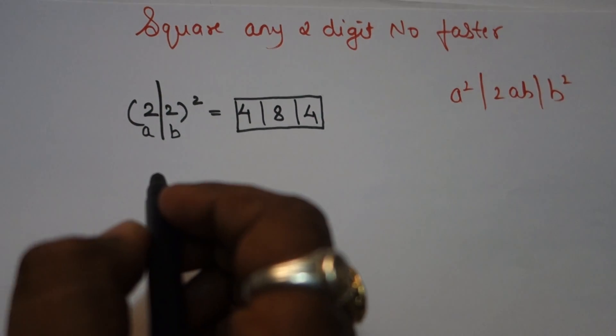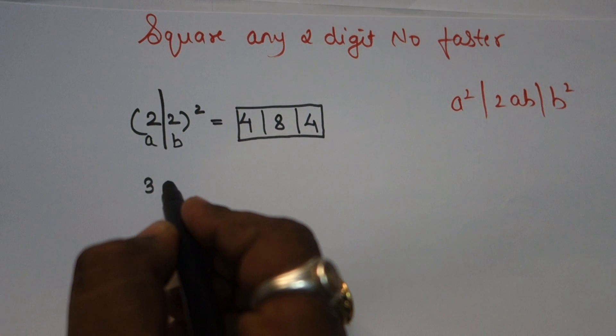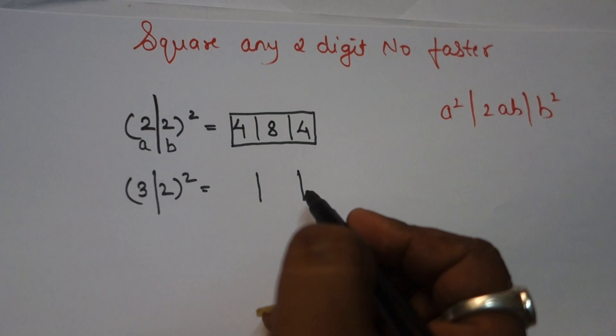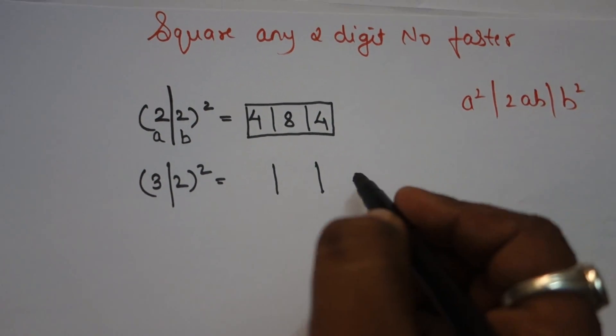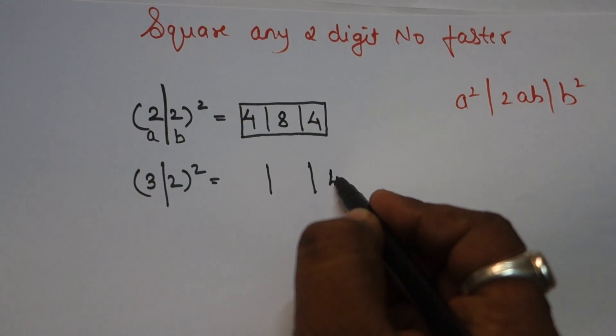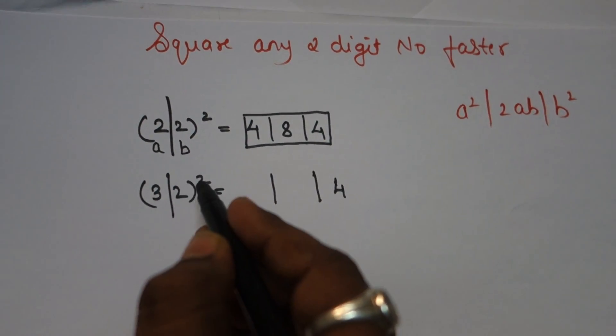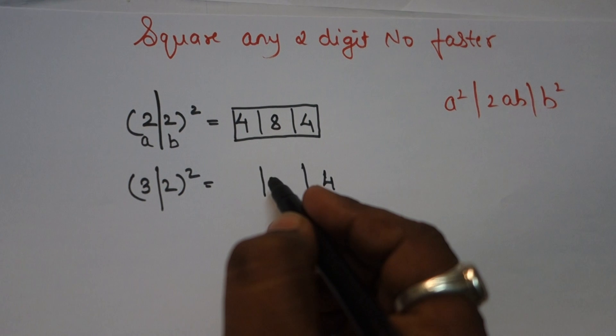Let's take the second example: 32. Apply the formula. 2 square is 4. Step 2: 2ab. 2×3×2 = 12.